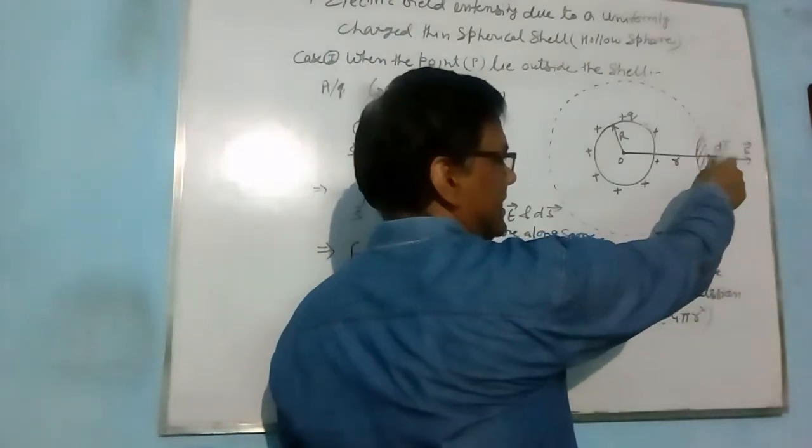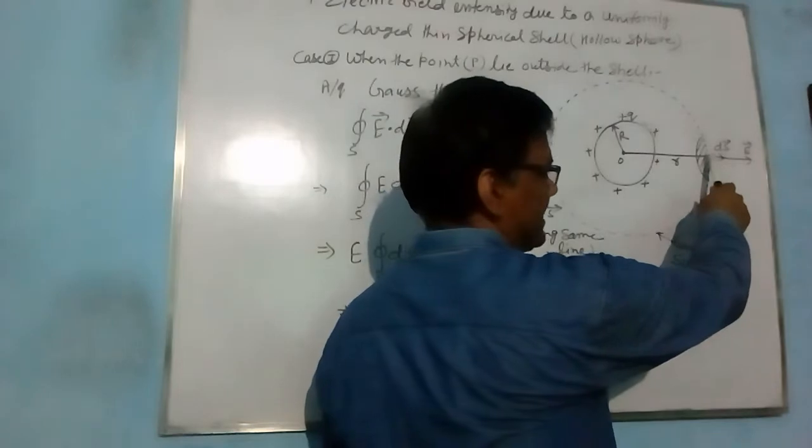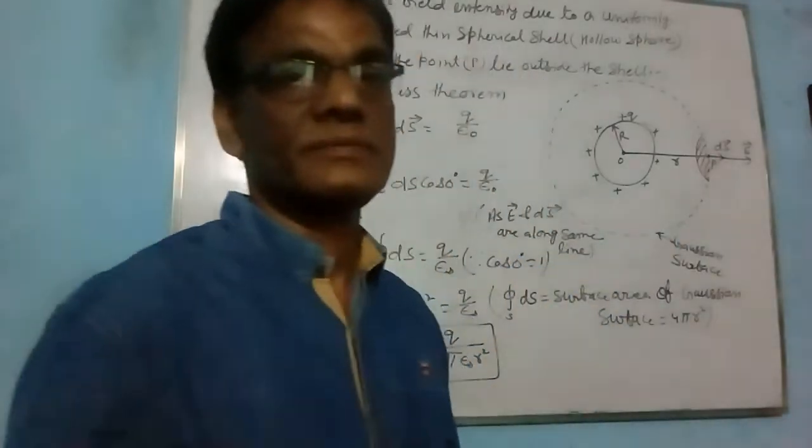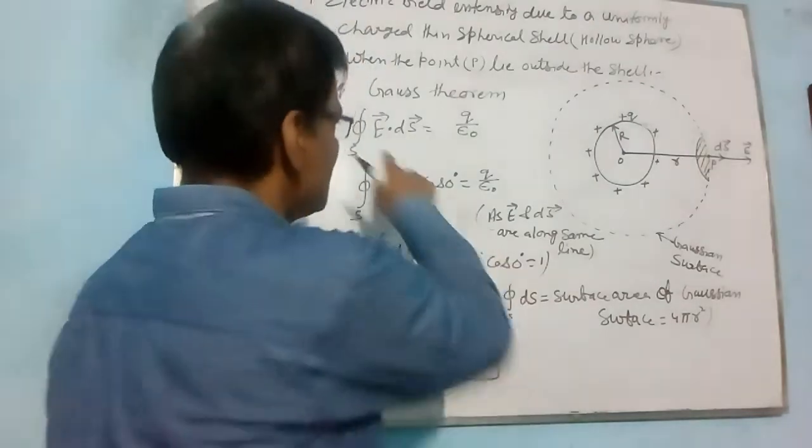We take a small area dS. And electric field intensity at this point is directed outward. So, according to Gauss law...